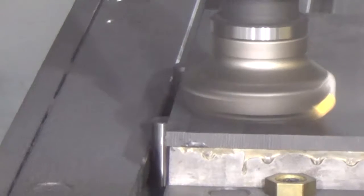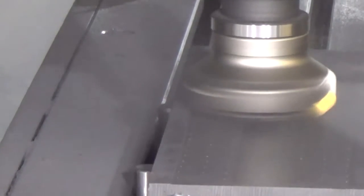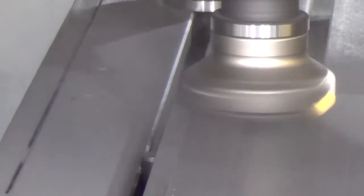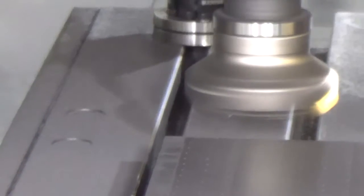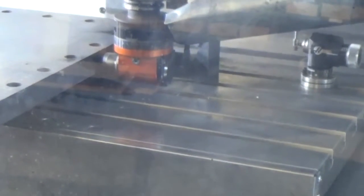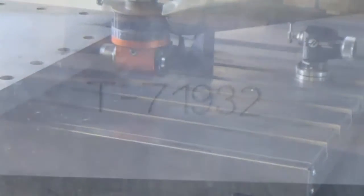For larger parts, our machine travel includes 50 inches in the X direction, 25 inches in Y, and 20 inches in the Z direction. And for extremely tall workpieces, the machine's right angle milling head offers even more flexibility.